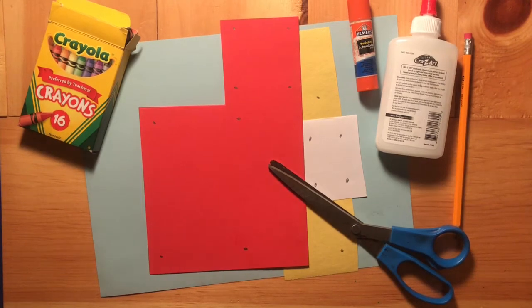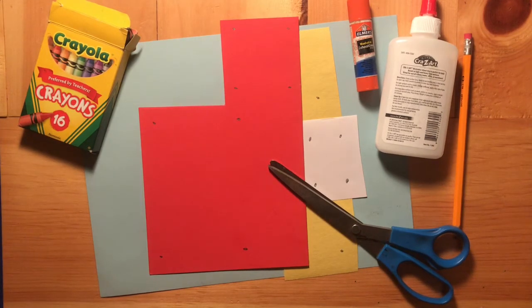This week we're making the fire truck. You will need the fire truck packet of paper that looks like this in your OT folder. You will need a pack of crayons, you will need some scissors, you will need some glue, a glue stick or a glue bottle, and you will also need a pencil. So grab that and let's get started.